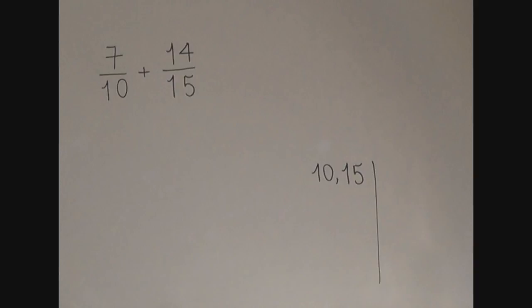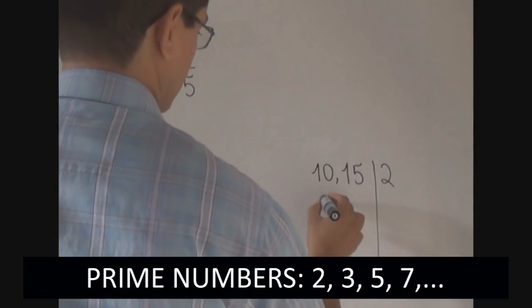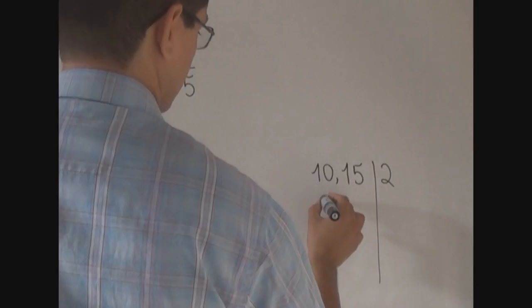We test the divisibility of these numbers by prime numbers, 2, 3, 5, 7. We start with 2, if some of the numbers we have is divisible by 2. If any of these two numbers is divisible by 2, we write the result of the division below the number. If it is not divisible, we just repeat the number.